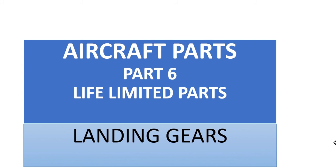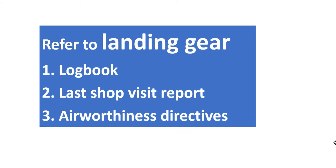This is part 6 for life-limited parts, about the landing gear — nose and main. To get these items, you must refer to the landing gear manufacturer logbook for this landing gear and the last shop visit reports.